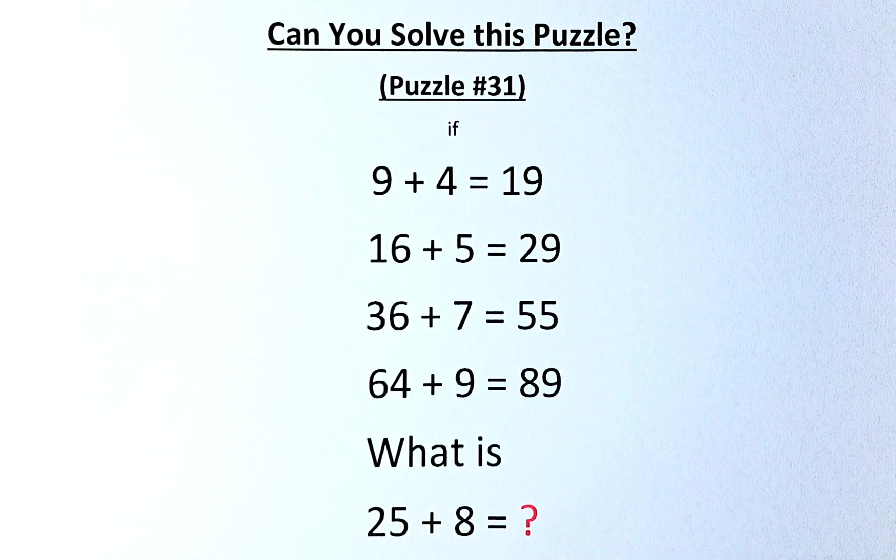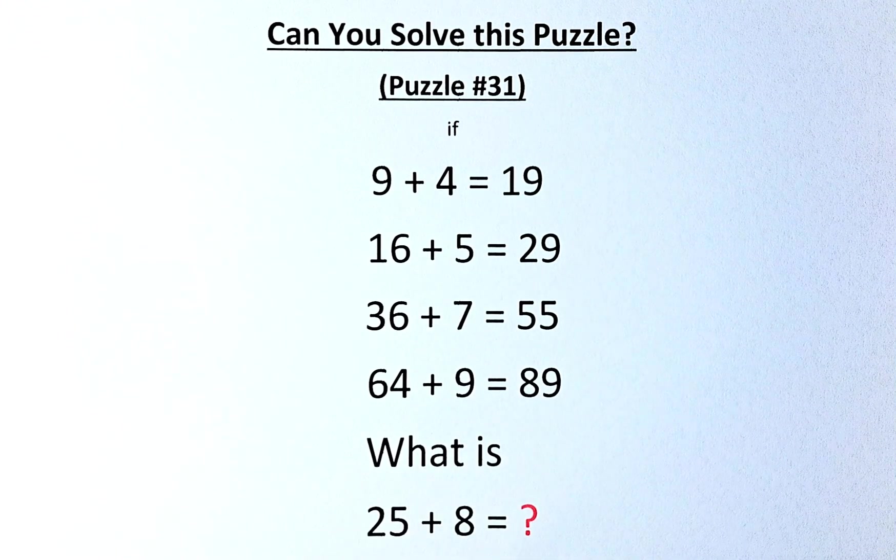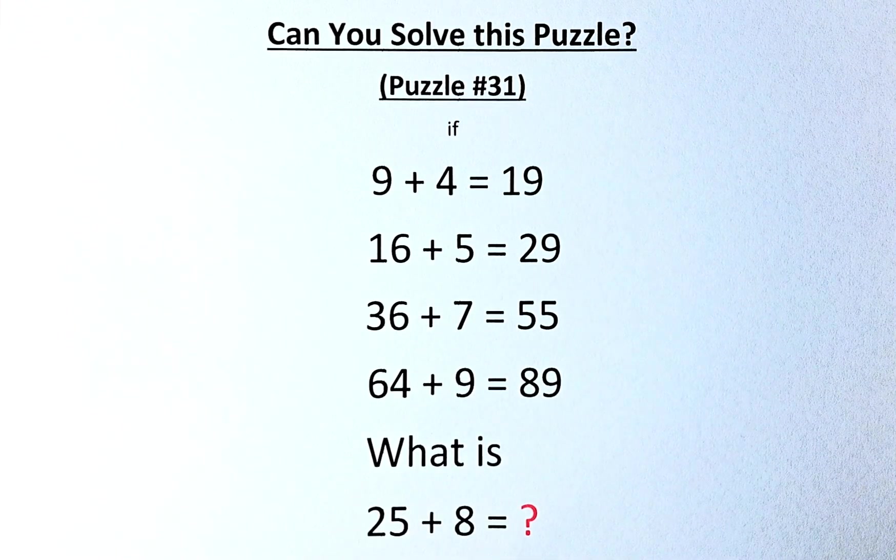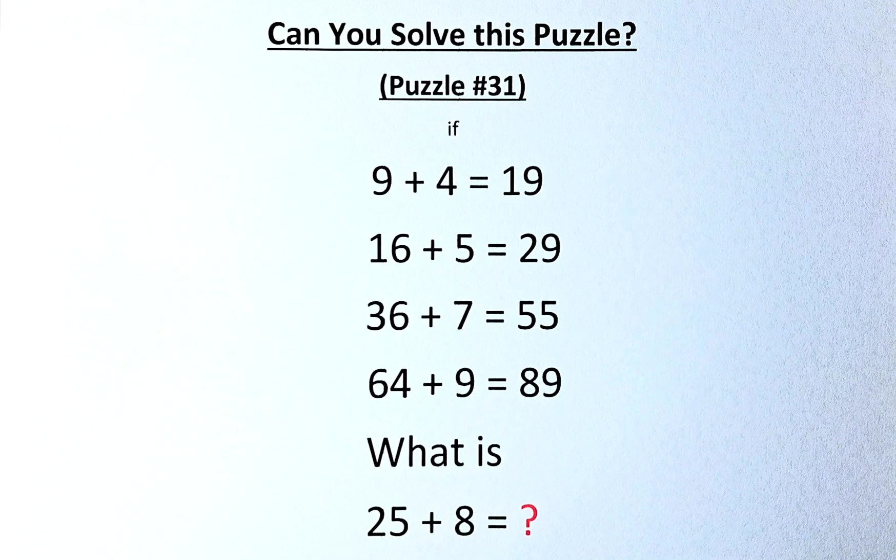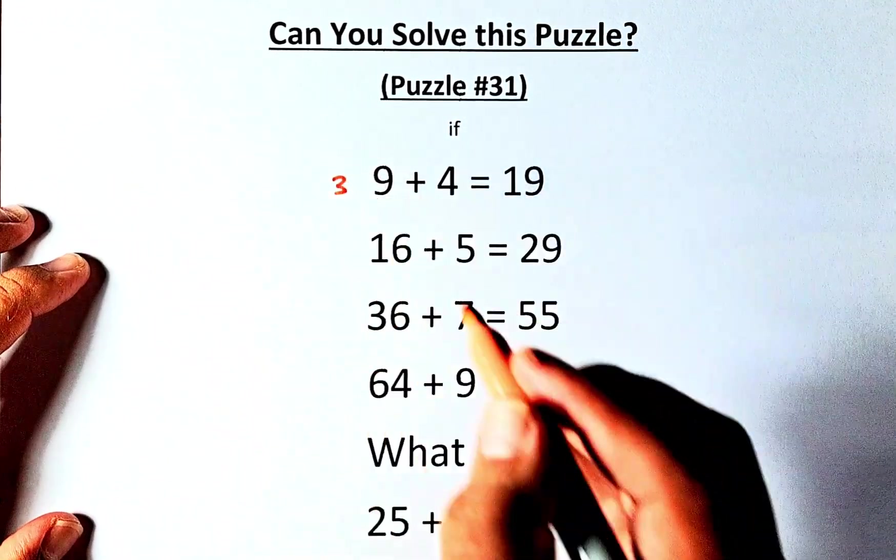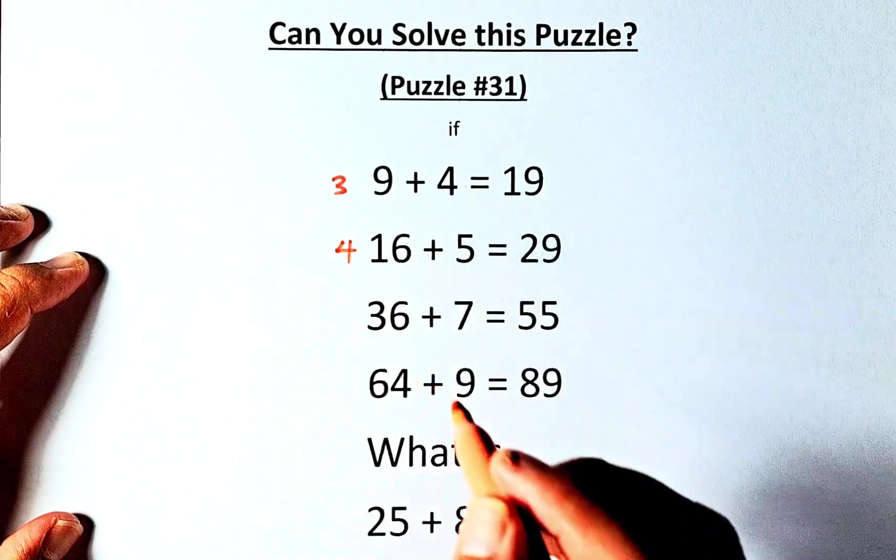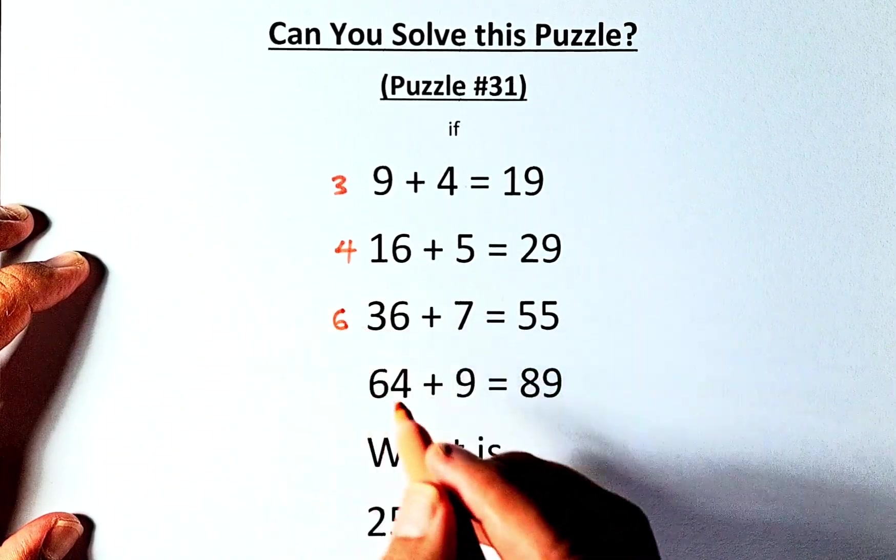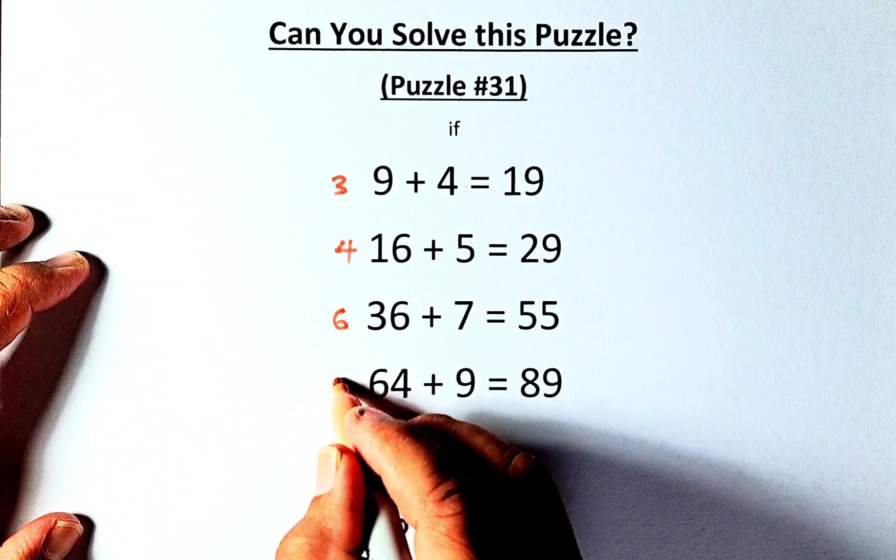On the first number, 9, 16, 36, 64, they are all square numbers. So to do that, we are going to square root the answer. So 9 when you square root becomes 3, 16 becomes 4, 36 square root becomes 6, and 64 becomes 8.